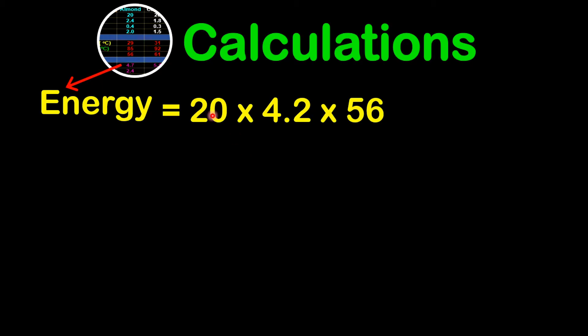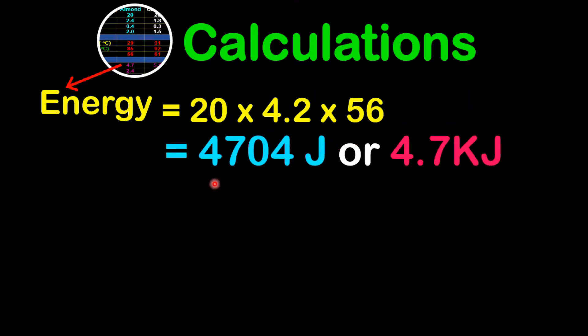Now for an example calculation, we are going to calculate the total energy for almond. The energy here will be 20 which is the mass of water, multiplied by 4.2 which is the specific heat capacity of water, multiplied by 56 which is the change in temperature. And so this gives us 4,704 joules or 4.7 kilojoules.